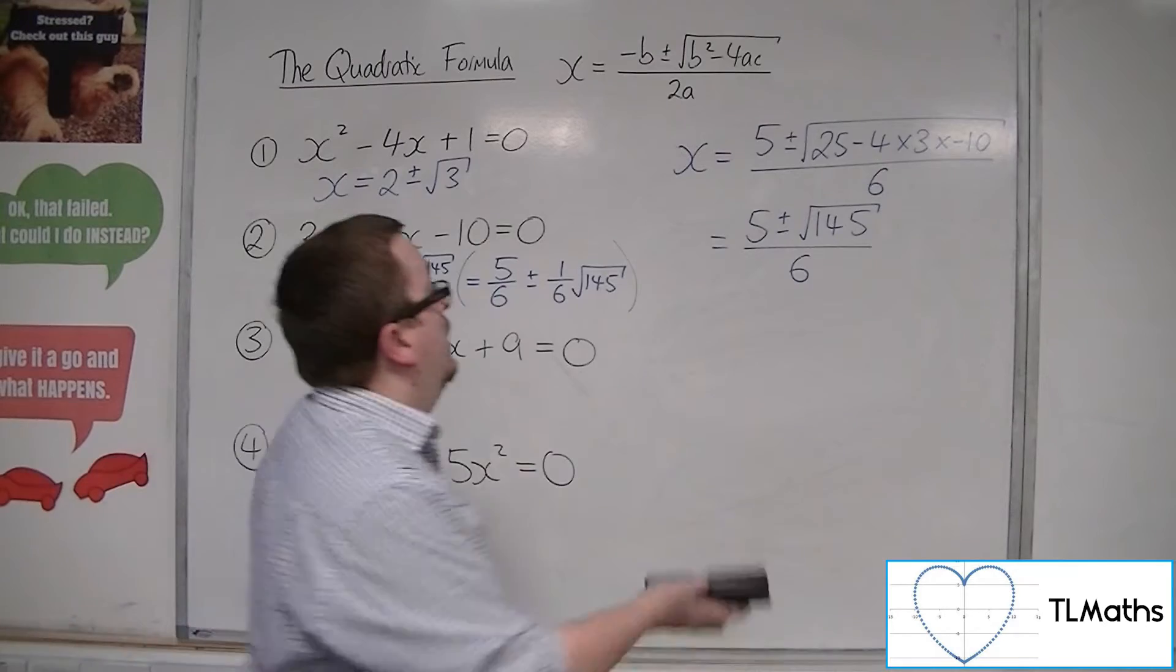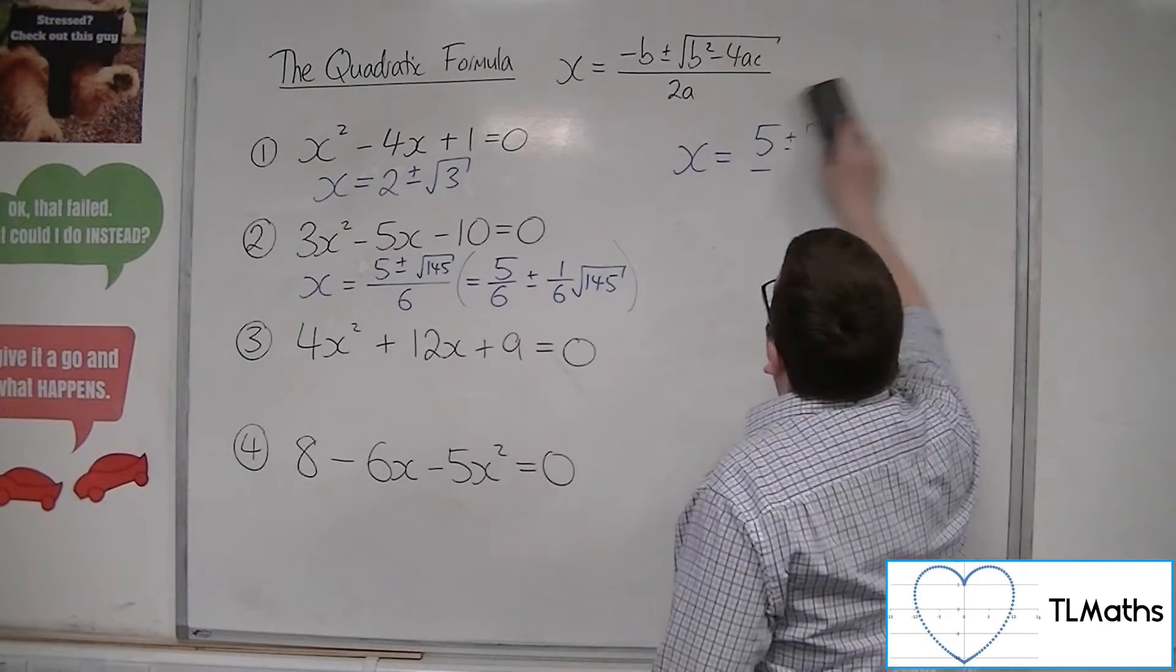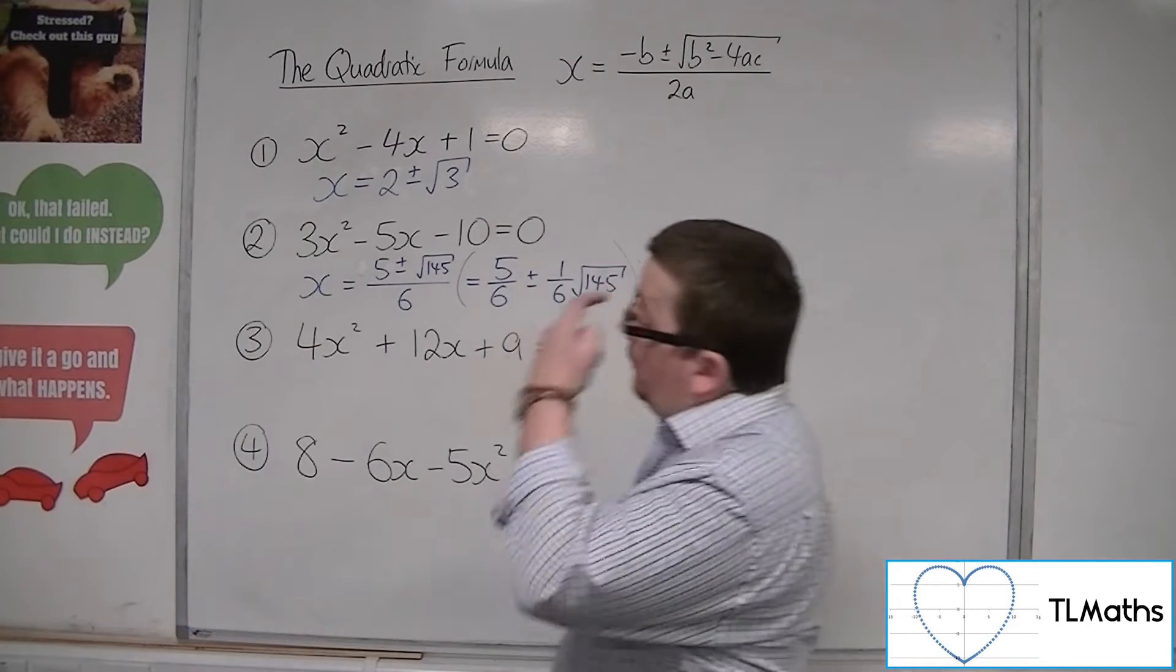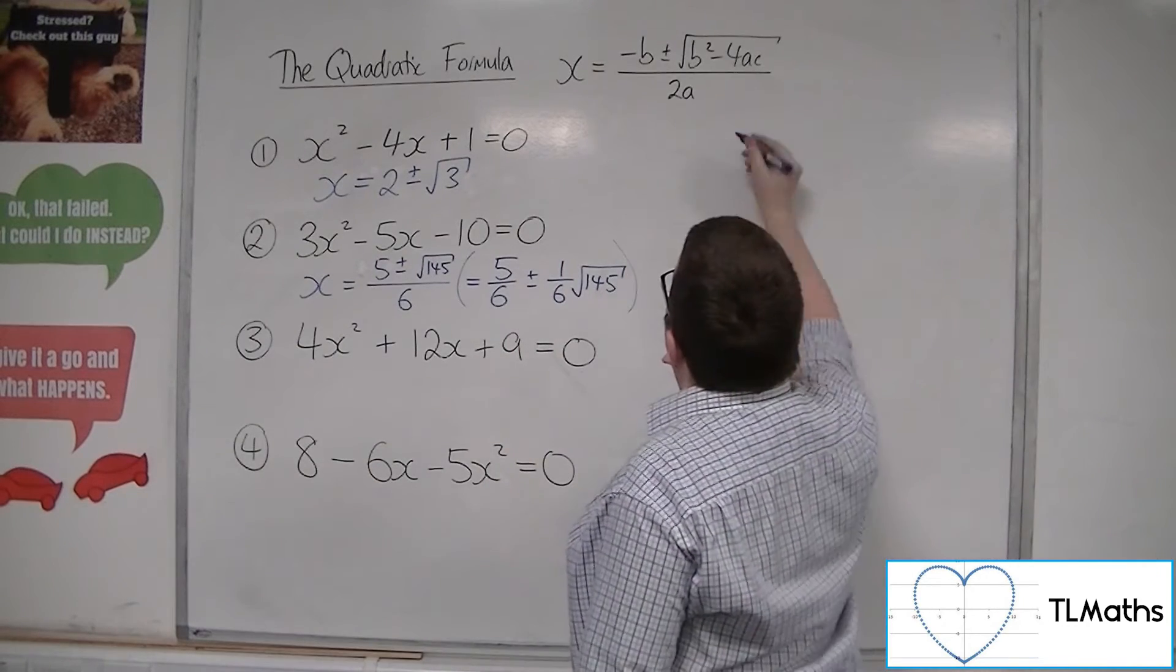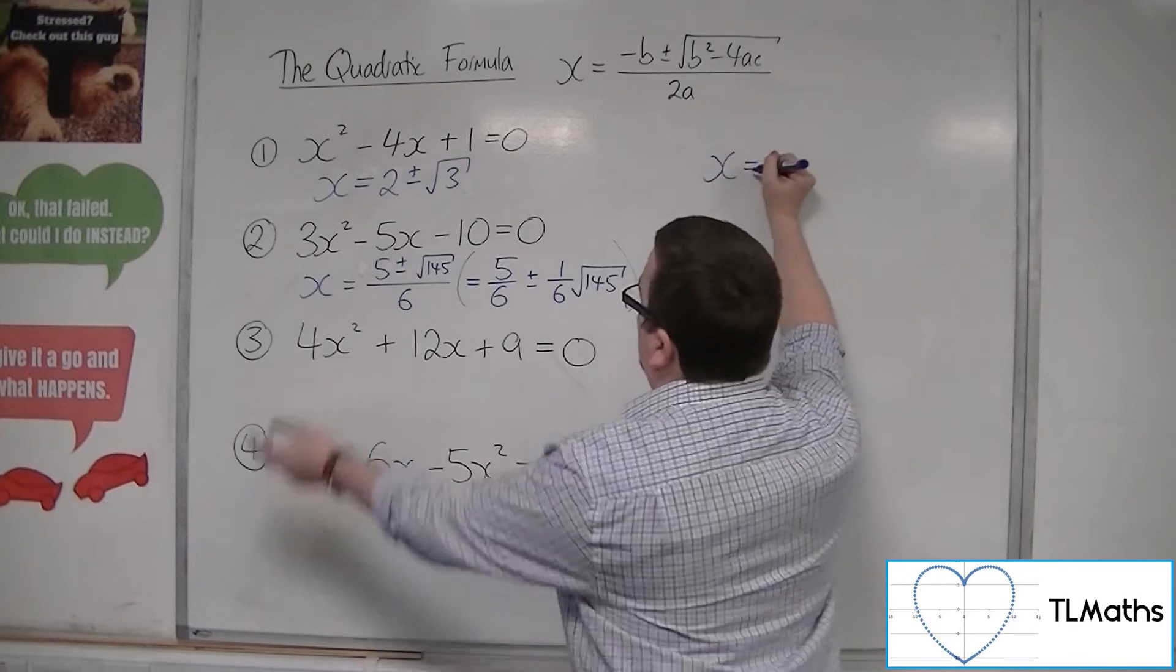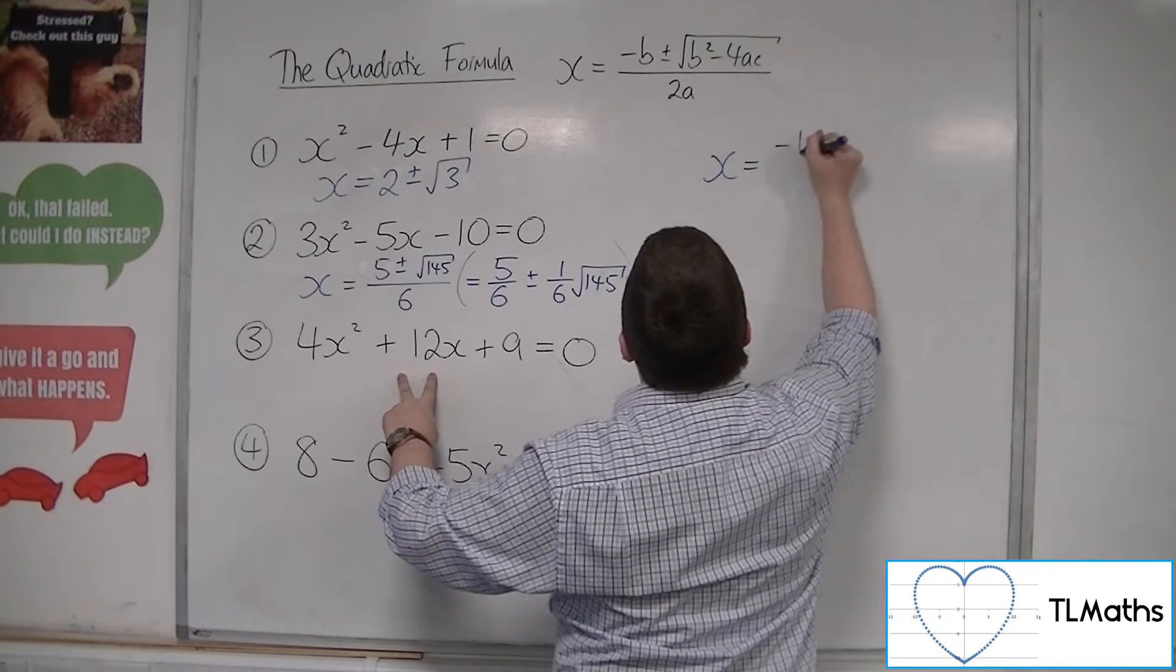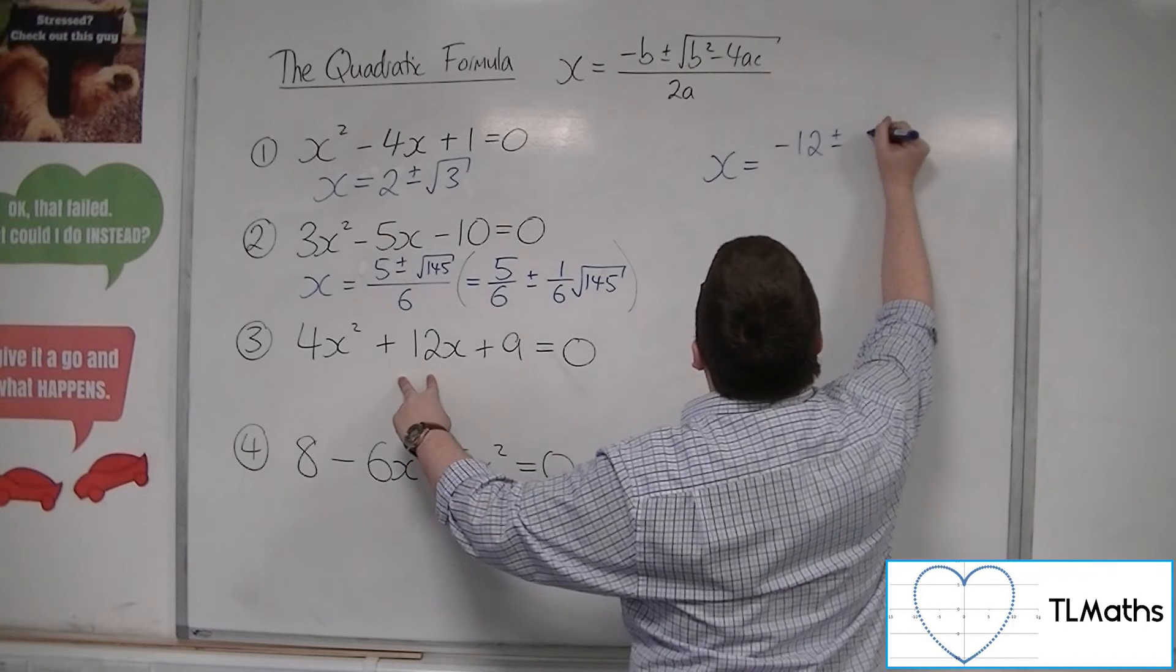Okay, so let's have a look at number 3. We've got 4x squared plus 12x plus 9 equals 0. So x equals minus b, so minus 12, plus or minus b squared.